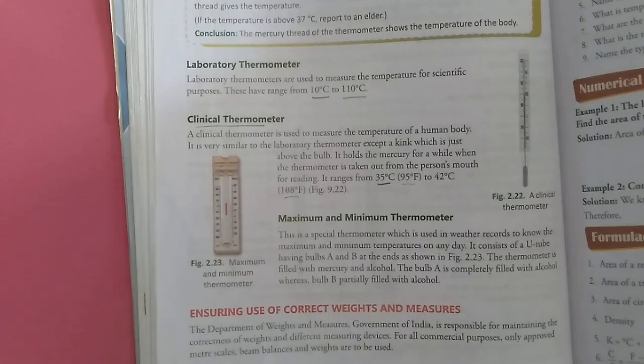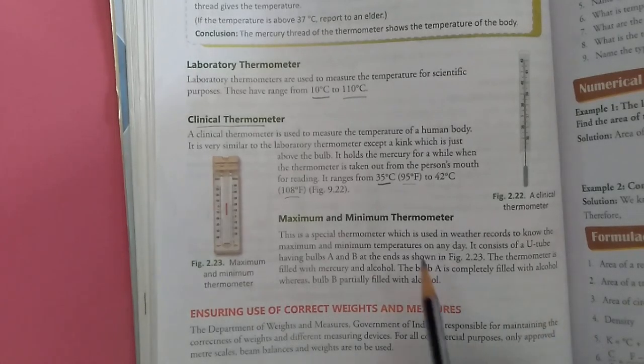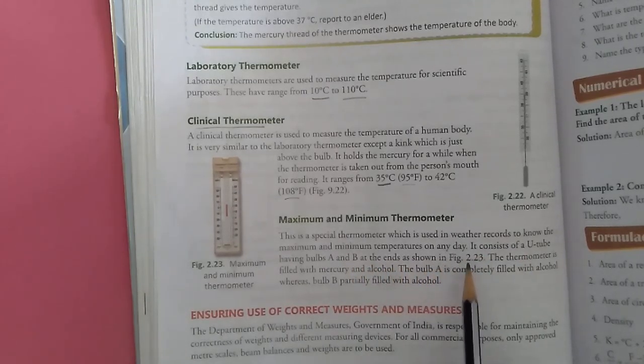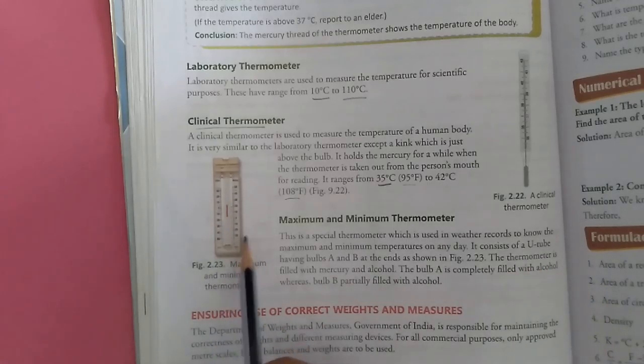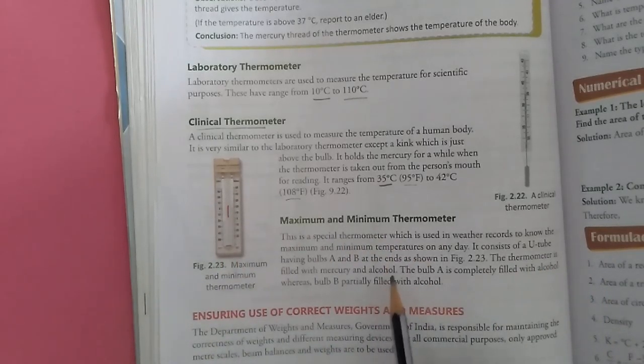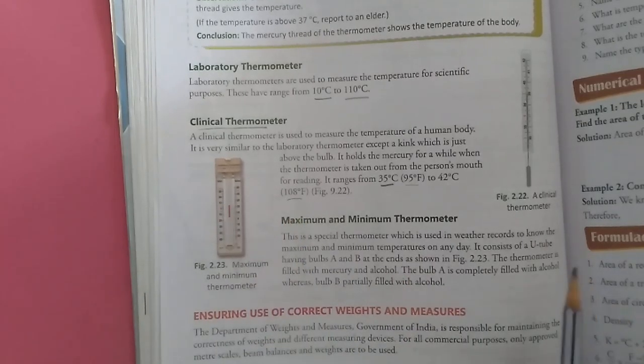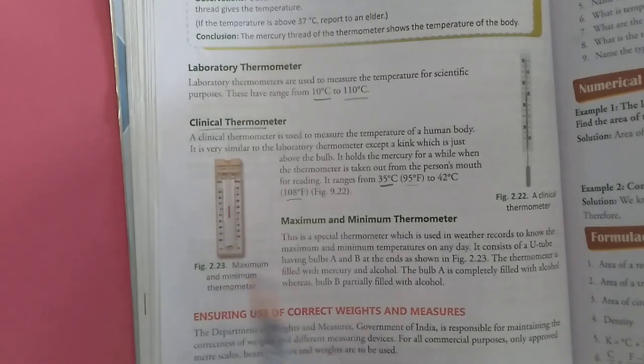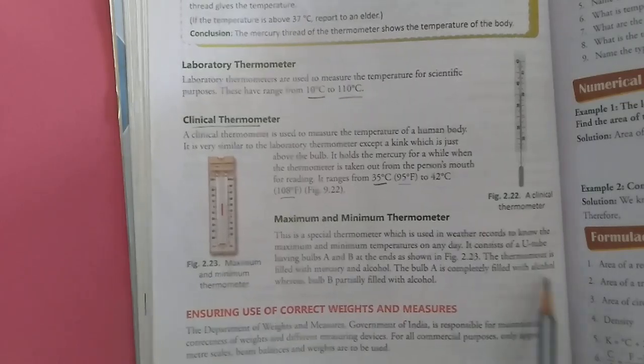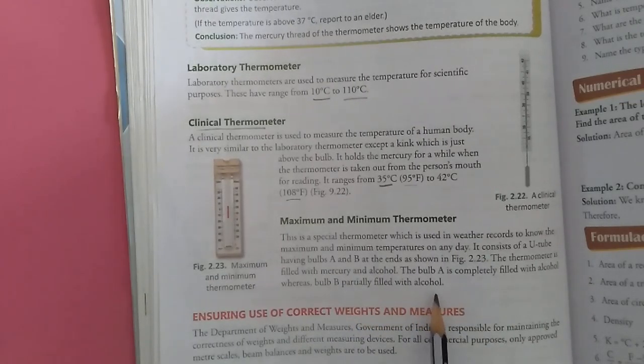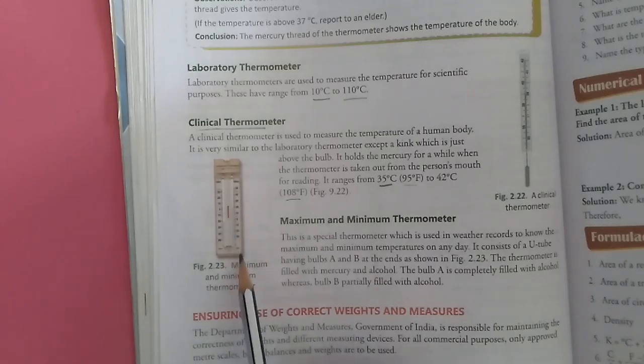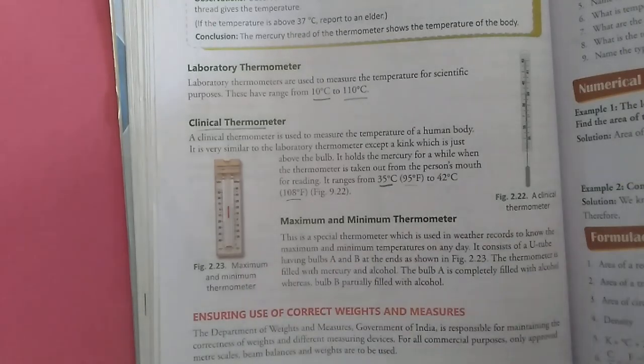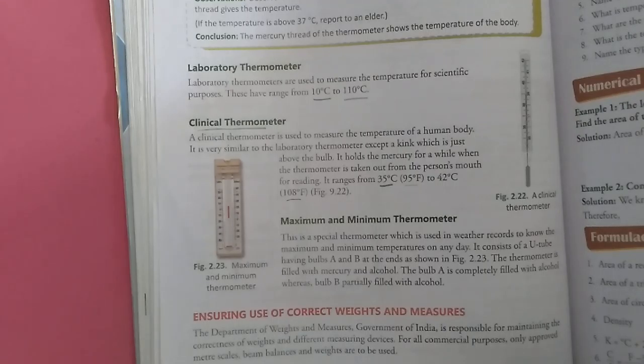Maximum and Minimum Thermometer. There is a special thermometer which is used in weather records to know the maximum and minimum temperature on any day. This consists of a U-tube having bulbs A and B at the ends. The thermometer is filled with mercury and alcohol. The bulb A is completely filled with alcohol whereas bulb B is partially filled with alcohol. This is all about laboratory, clinical, maximum and minimum thermometer.